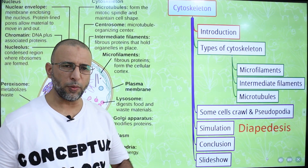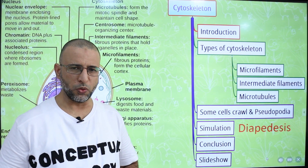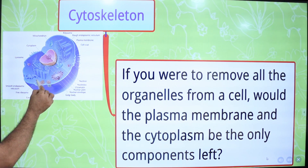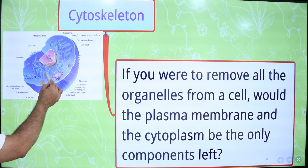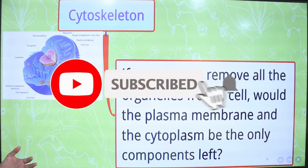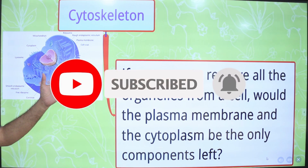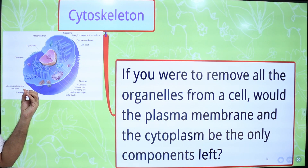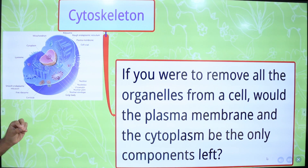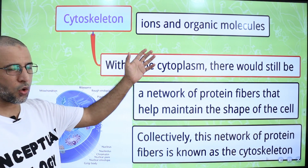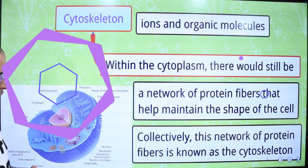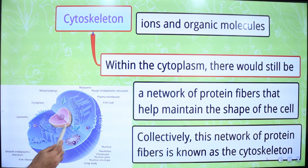Cytoskeleton is a network of filaments and tubules that extends throughout a cell through the cytoplasm. In an animal cell, the outermost layer is the cell membrane. Inside the cell membrane there is cytoplasm, and in the cytoplasm different cytoplasmic organelles are present like endoplasmic reticulum, ribosomes, mitochondria, Golgi bodies, lysosomes, and centrioles. If you were to remove all the organelles from a cell, would the plasma membrane and cytoplasm be the only components left? The answer is no. Within the cytoplasm there would still be ions and organic molecules, as well as a network of protein fibers that help to maintain the shape of the cell. Collectively, this network of protein fibers is known as the cytoskeleton.